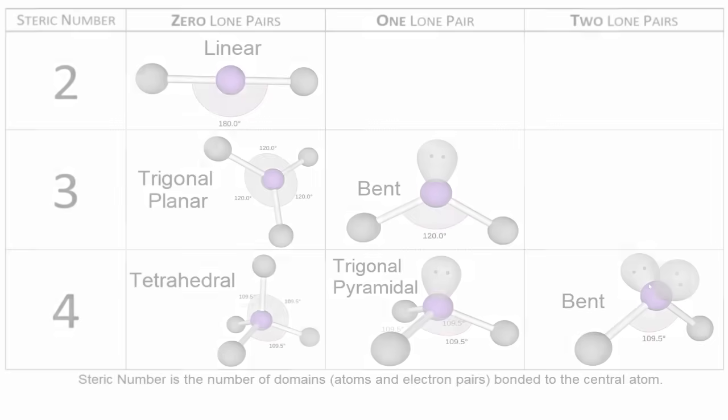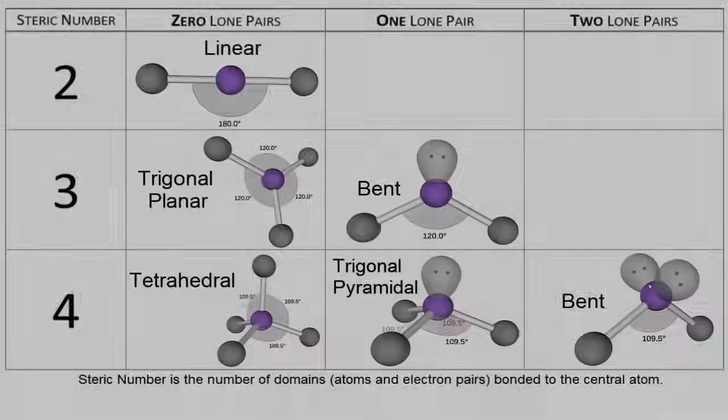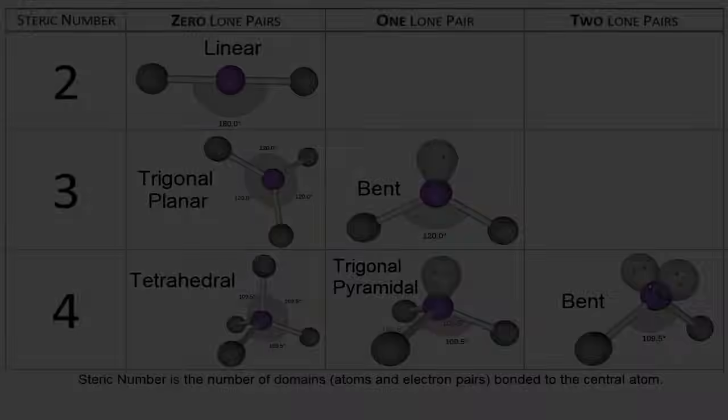In this video, we've looked at the major molecular geometries using the VSEPR model. You should have an intuitive sense now of how lone pairs and atoms interact with each other and repel, spreading out to give a molecule its shape. Using the Lewis structure, looking at the steric number, and thinking about how these atoms spread out, you should be able to figure out these major molecular geometries. This is Dr. B with the VSEPR model — thanks for watching.